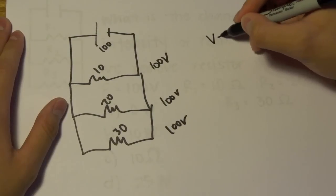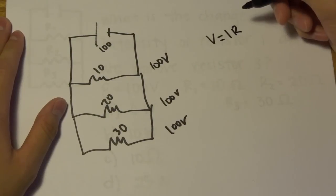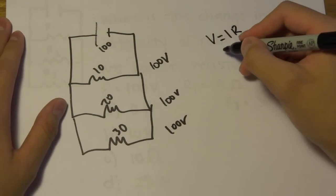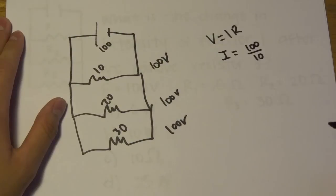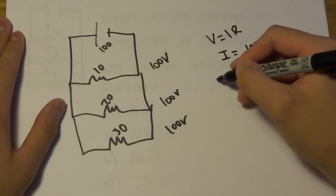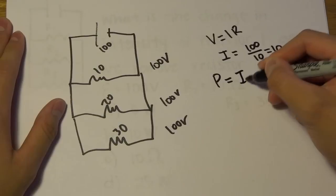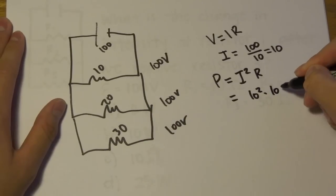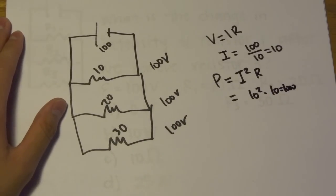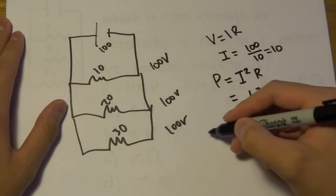And so if we do V equals IR, we find that I equals 100 over 10, and for that resistor right there, which equals 10. And if we remember for P equals I squared R, I squared is 10 squared times 10 equals 1000. And so now let's just do the second case.